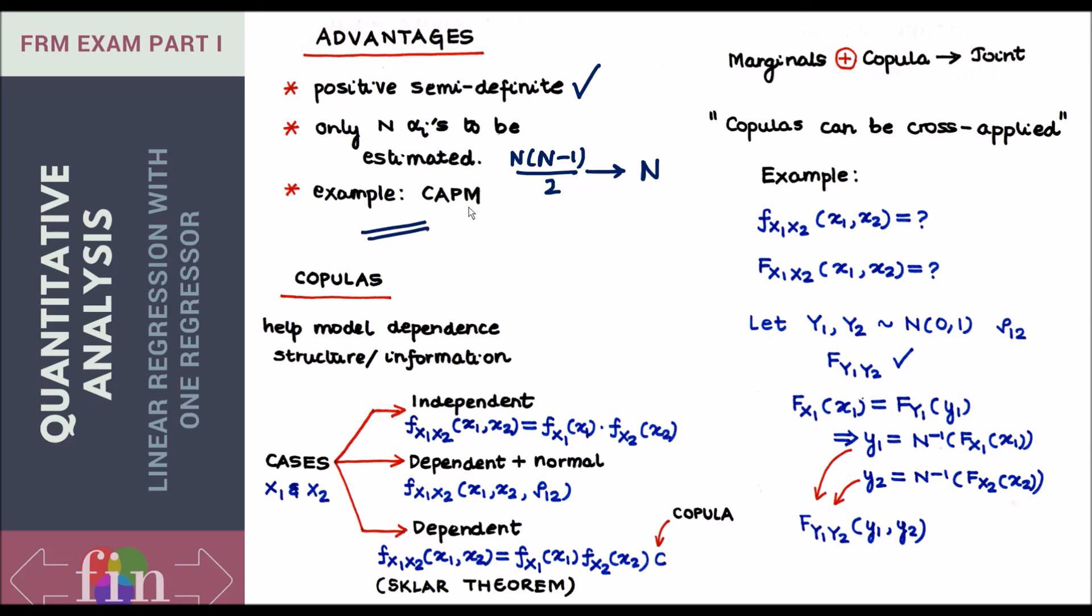A practical example of one factor model, keep in mind, is the CAPM - that's the capital asset pricing model. In this model, the F that we talked about is basically the market, it's the market return. So we'll deal with CAPM in a dedicated reading. I just wanted to at this point highlight this fact that the one factor model is what we'll do as CAPM in portfolio theory. This is about the one factor model.